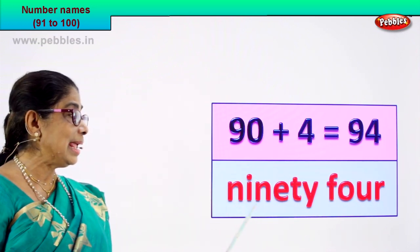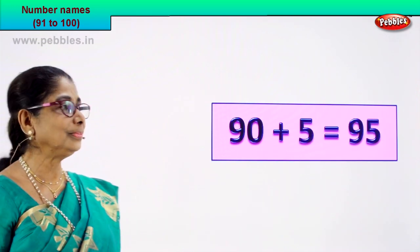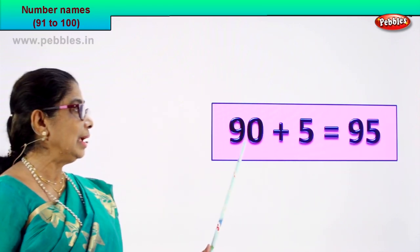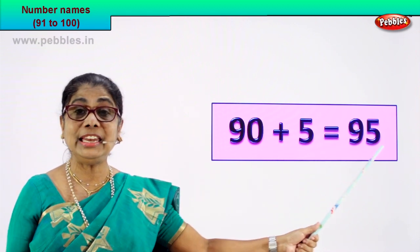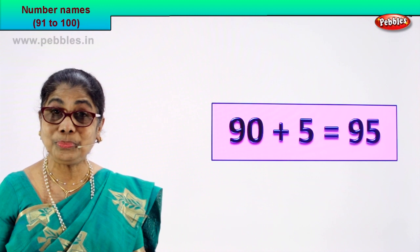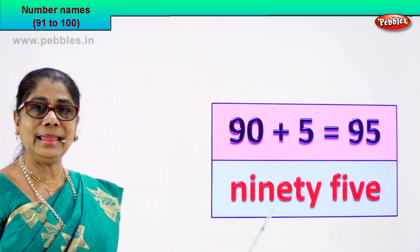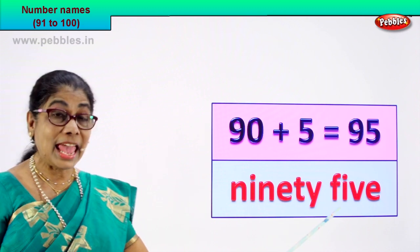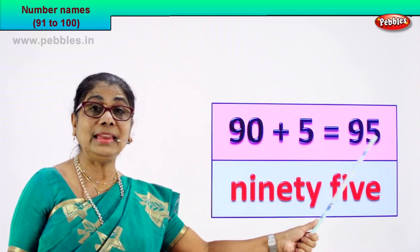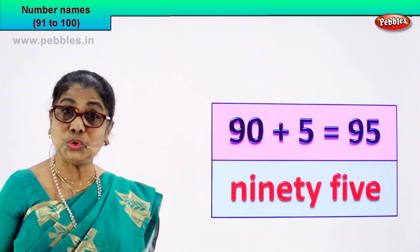The numeral is 94 and its name is ninety-four. Very good! Shall we go to the next numeral? Ninety plus five is equal to ninety-five. 9 and 5 — ninety-five. That's the numeral. How do we write its name? You know ninety, you know five. Easy: N-I-N-E-T-Y — ninety — F-I-V-E — five. Ninety-five. The numeral is 95 and its name is ninety-five. Very good!